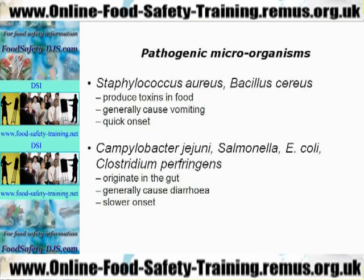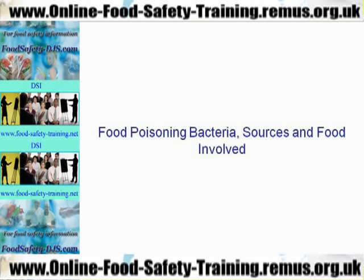With campylobacter, salmonella, e. coli, and clostridium, these originate in the gut, generally cause diarrhea but not vomiting, and there's a slower onset — so it takes a longer time to develop. On the next slide I'm going to show you some food poisoning bacteria, where they come from, and the food we tend to associate them with.